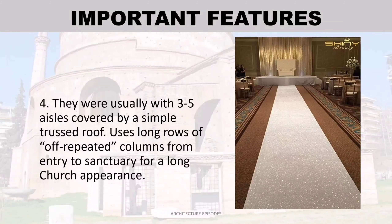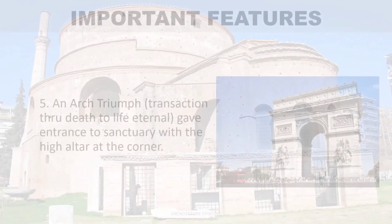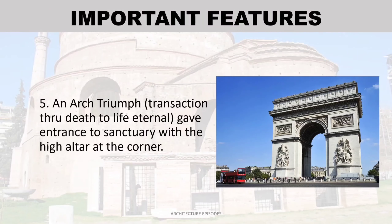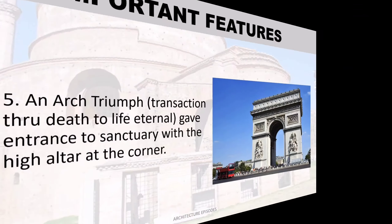They were usually three to five aisles covered by a simple trussed roof. Long rows of repeated columns from entry to sanctuary gave a long church appearance. An arch of triumph at the transept gave entrance to the sanctuary with the high altar at the east end.